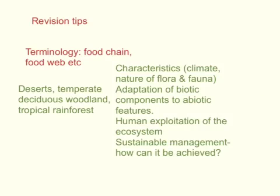Finally, a few revision tips for the whole course. Make sure you brush up on your terminology, especially to do with the food chain and the food web. Remember that the three ecosystems we've studied are deserts, temperate deciduous woodlands, and tropical rainforests. For each ecosystem, make sure you understand the characteristics, the climate, and the nature of the plants and animals — the flora and fauna. Understand how the biotic components have adapted to the abiotic features like climate. Understand how humans have exploited each ecosystem for economic outcomes — settlement, agriculture, tourism, mineral extraction — and how sustainable management can be achieved.